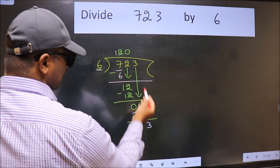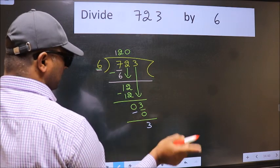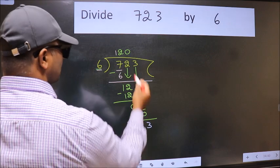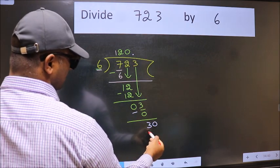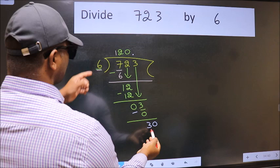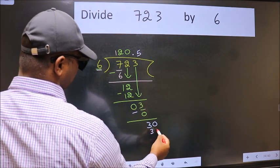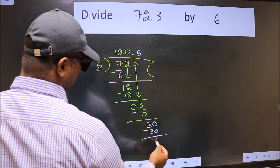Over here, we did not bring any number down, and 3 is smaller than 6. So now we can put 0. So 30. When do we get 30 in the 6 table? 6 times 5 is 30. Now we subtract. We get 0.